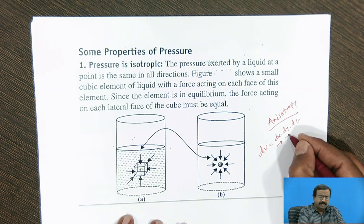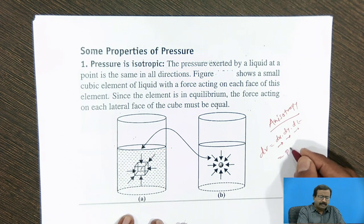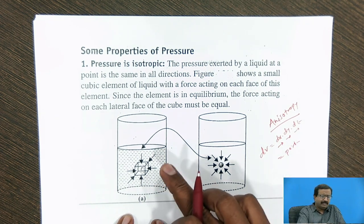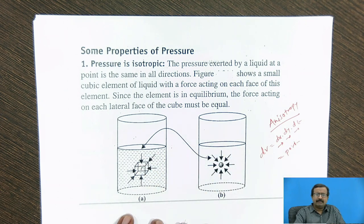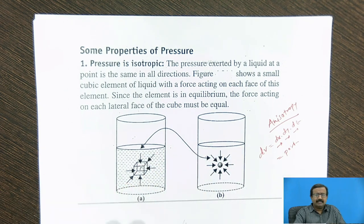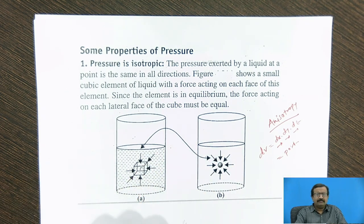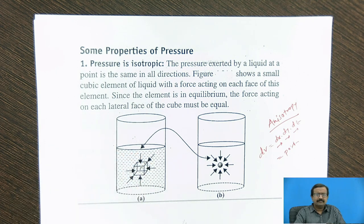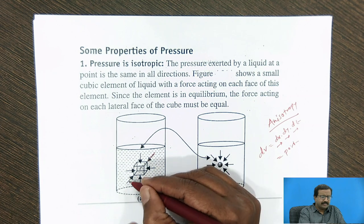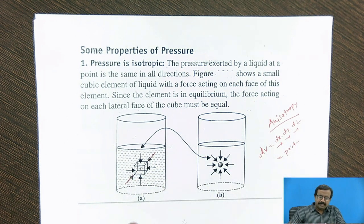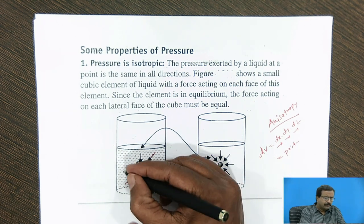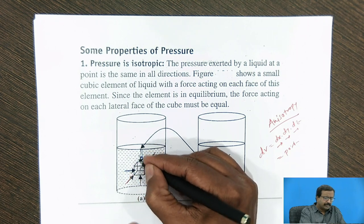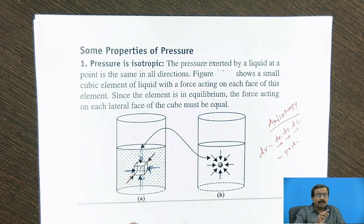And when that tends to zero, individually tends to zero, it becomes a point. We will see exactly transformation from this to this, exactly how it happens. Now see what happens here, when I see the pressure acting on all the edges of this particular element. If the pressure on this axis, then the pressure along this axis and the pressure along this axis,